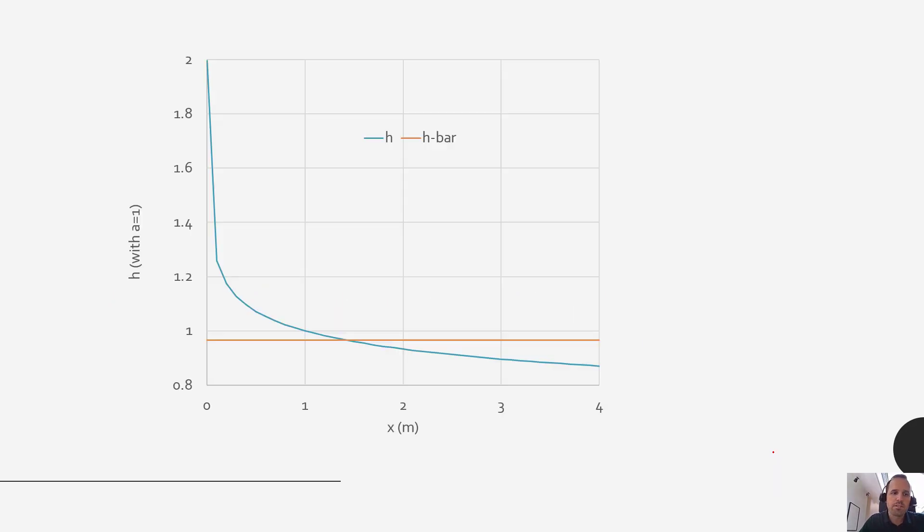So here we have our local heat transfer coefficient h plotted in blue. You can see that we start out higher and gradually decrease, and over the entire 4 meters our average heat transfer coefficient is here.